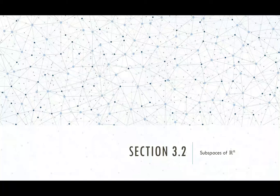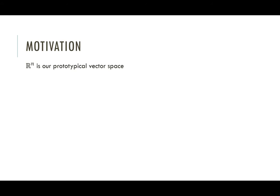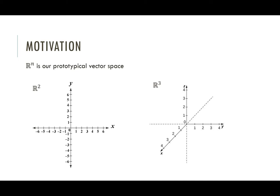Hello students, and welcome to our video covering subspaces of Rn, a topic in section 3.2 of your textbook. So jumping right in, I'd like to start with a little motivation. Rn is our prototypical vector space. So like R2, R3, we've been drawing vectors in these places all the time. These are where vectors live. They are our vector spaces.